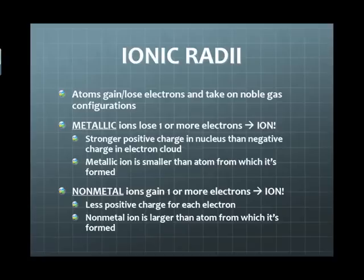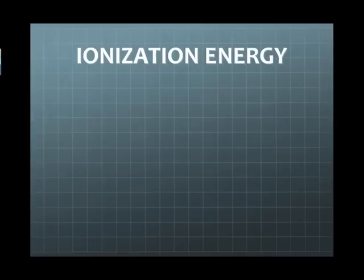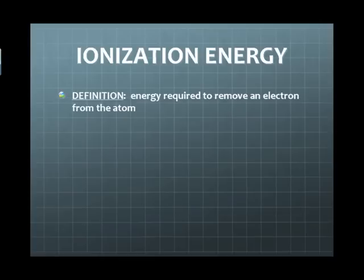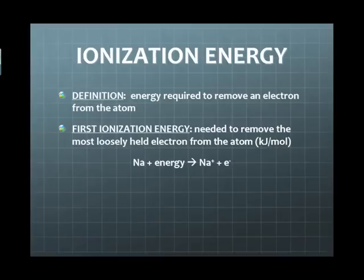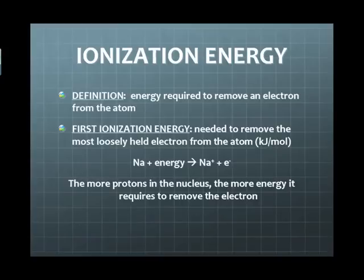The third periodic trend we need to address is ionization energy — pretty much like what it sounds. It's the amount of energy needed to ionize an atom, specifically to remove an electron from the atom. We're going to address first ionization energy: the energy needed to remove the most loosely held electron. For example, energy is imparted to sodium, removing an electron to produce a positively charged sodium ion. Typically, the more protons in the nucleus, the more energy it takes to remove that outermost electron.